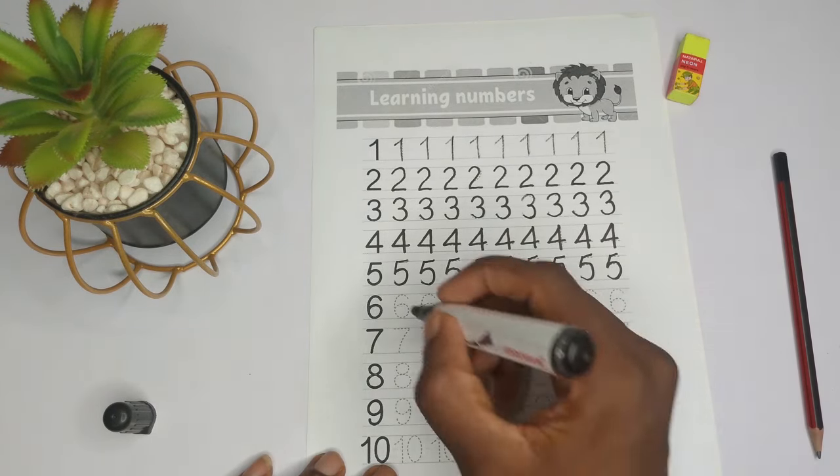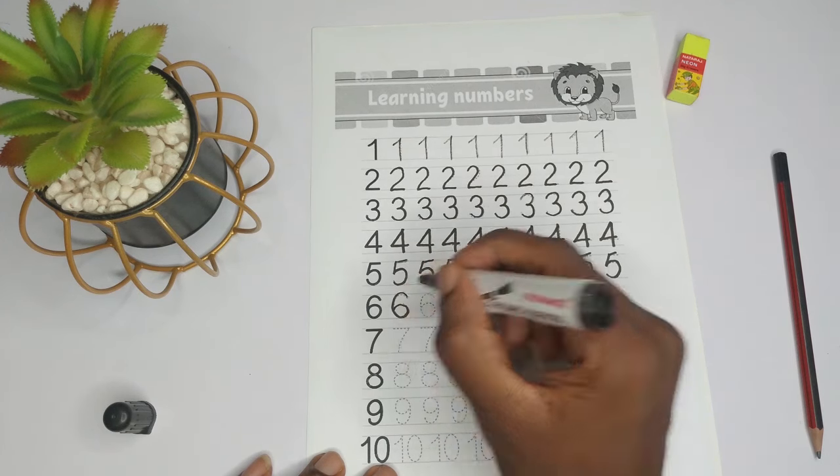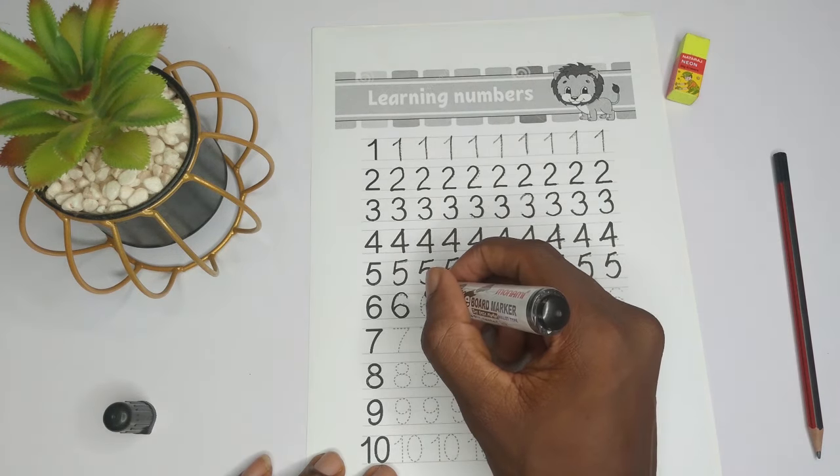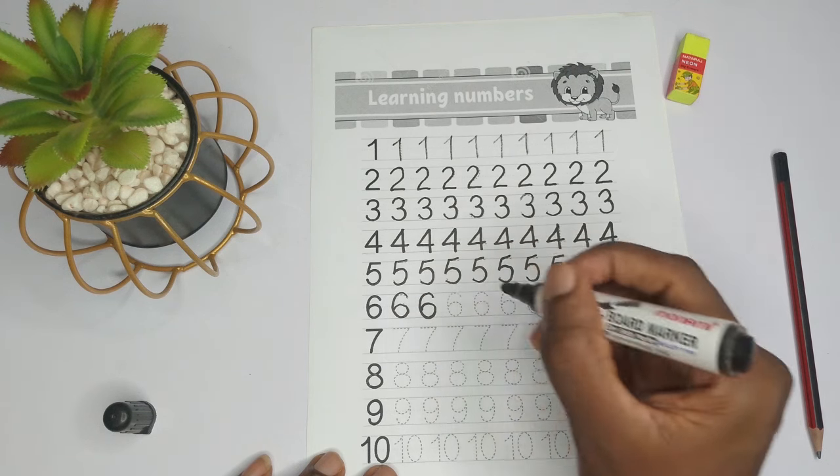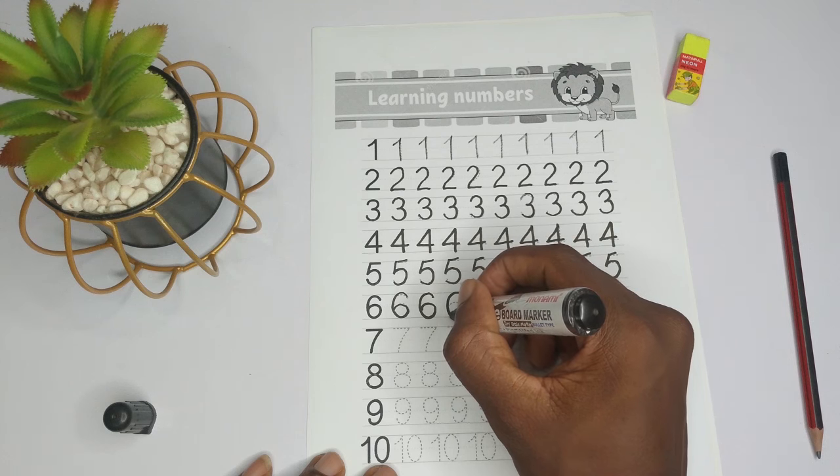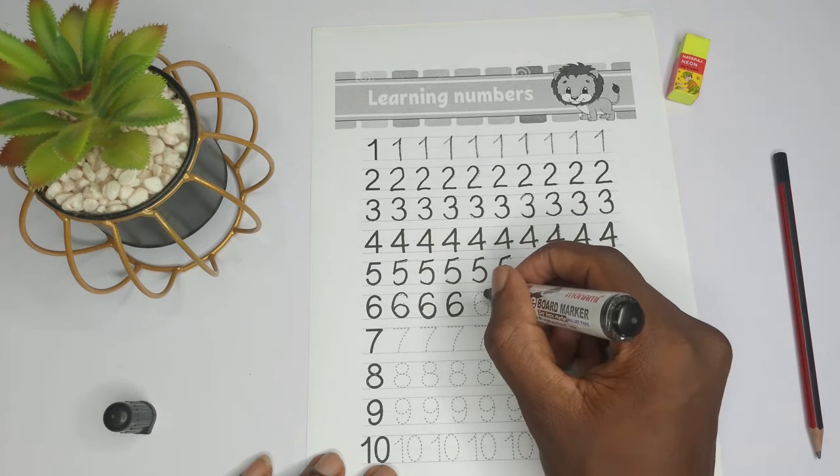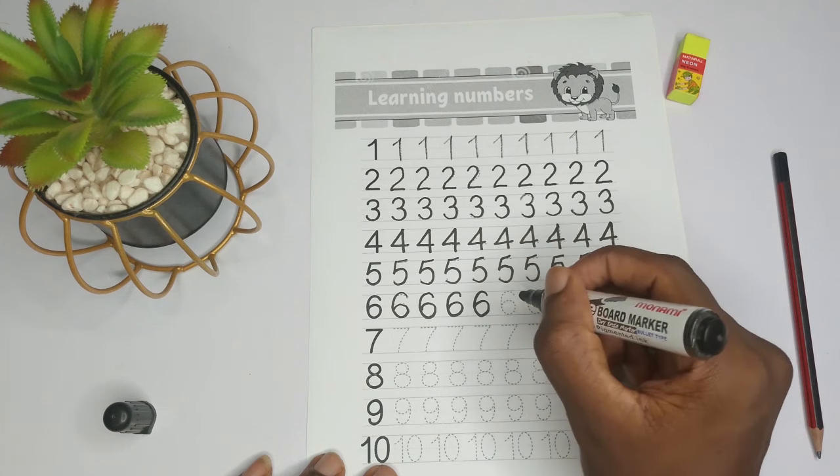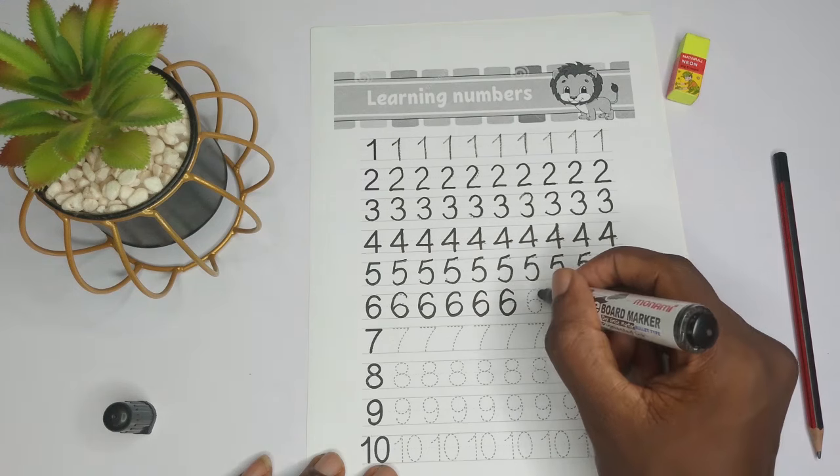This one is six. So we have six. We go to the top, all the way, and we curve it inside: six. Follow the dots, come down, curve it, then curve it inside: six. Okay, very good. Great.